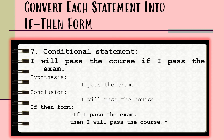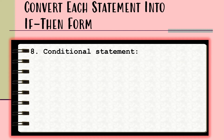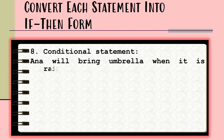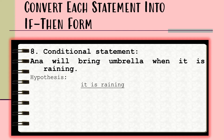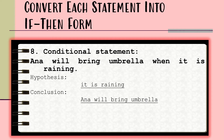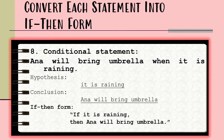For example number eight, the conditional statement is: 'Anna will bring an umbrella when it is raining.' The hypothesis is 'it is raining,' and the conclusion is 'Anna will bring an umbrella.' Converting this statement into its if-then form, the result is: 'If it is raining, then Anna will bring an umbrella.'